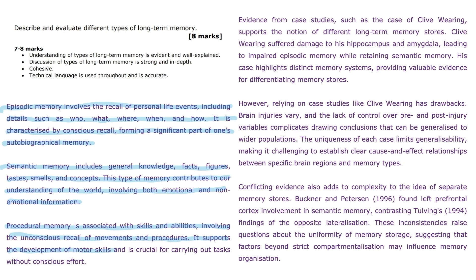Procedural memory supports the development of motor skills and is crucial for carrying out tasks without conscious effort. Evidence from case studies, such as the case of Clive Wearing, supports the notion of different long-term memory stores. Clive Wearing suffered damage to his hippocampus and amygdala, leading to impaired episodic memory while retaining semantic memory. His case highlights distinct memory systems, providing valuable evidence for differentiating memory stores.